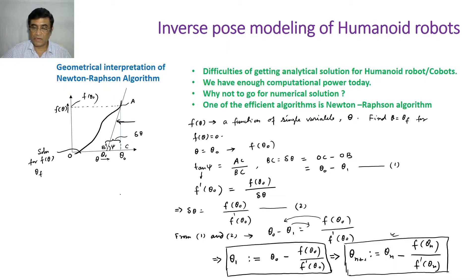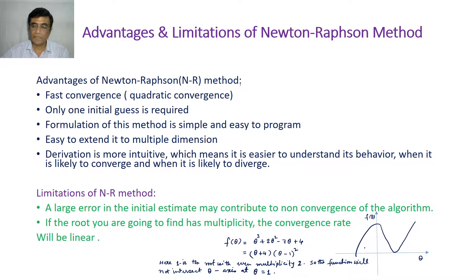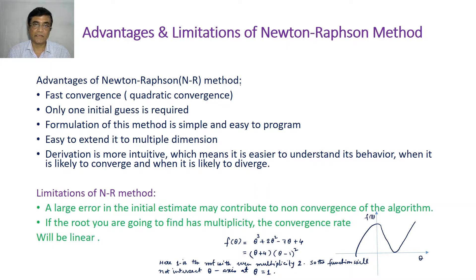The algorithm runs like this: in a particular iteration i, theta_{n+1} is updated as theta_n minus the functional value at theta_n divided by the first derivative of that function at theta_n. This is the algorithm. Although it is a very simple algorithm, it has several advantages but some limitations also, and it is pertinent to know its advantages first.